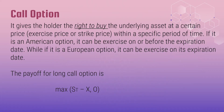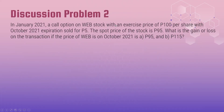A call option gives the right to buy. The difference between an American option and a European option: an American option can be exercised on or before the expiration date, while a European option can only be exercised on its expiration date. So remember: if it's a call option, it's the right to buy. To illustrate that, let's have discussion problem number two.